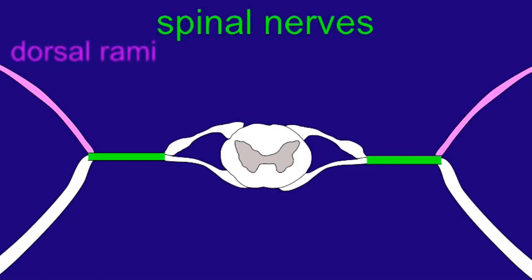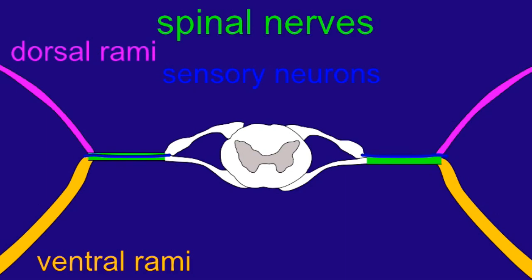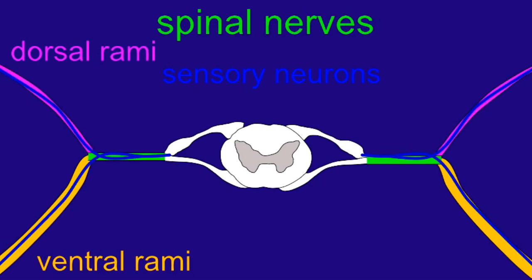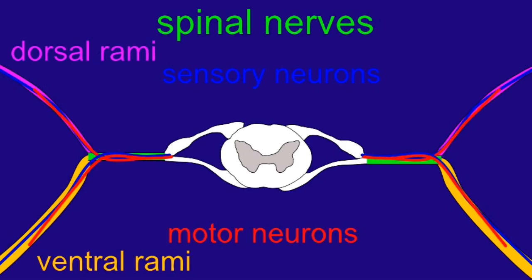The dorsal epaxial musculature is innervated by the dorsal rami of spinal nerves.